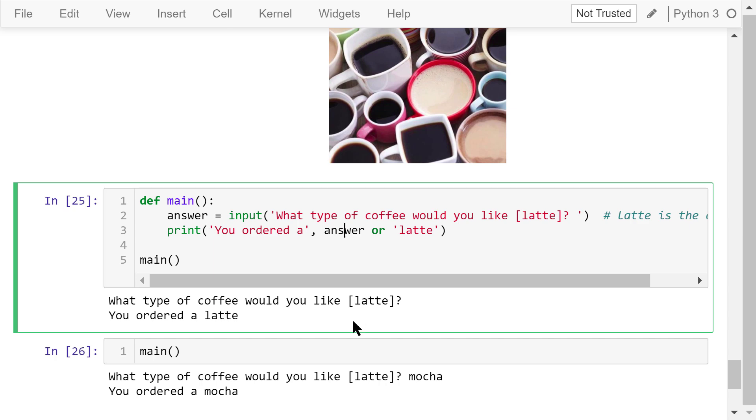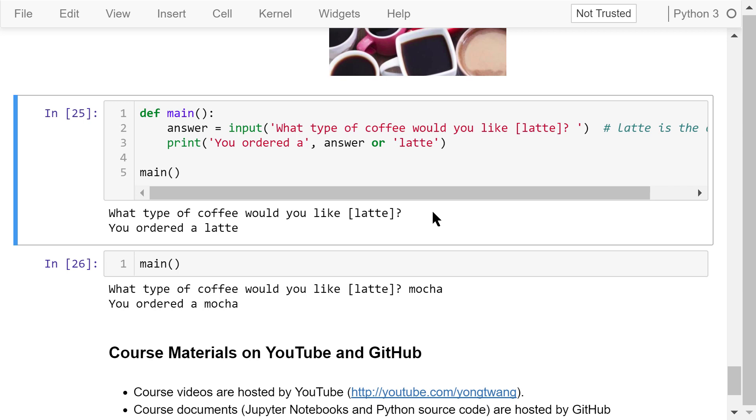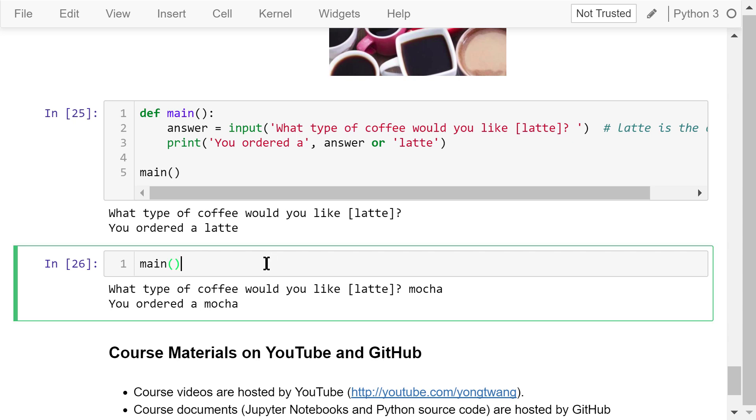What type of coffee would you like? I directly hit enter and choose latte. The output shows you ordered a latte. Call this function again. This time my input is mocha. The output is you ordered a mocha.